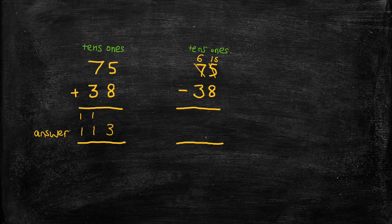And now I can subtract 8 from 15 to get 7, and then moving to the tens column, I'm subtracting 3 from 6, so that'll be 3, so our final answer is 37.